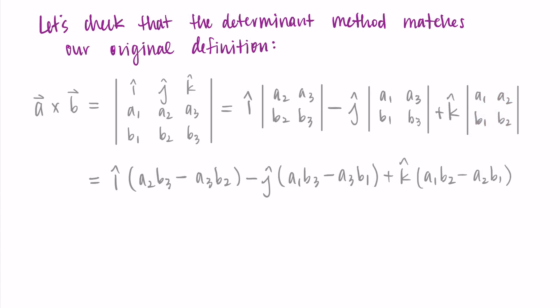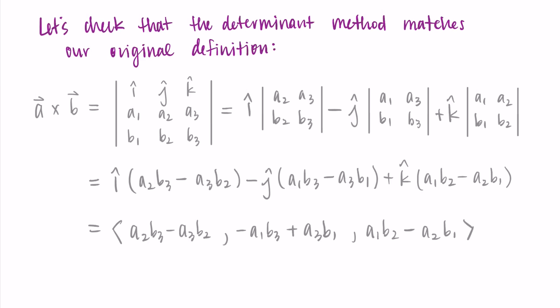Then with the way I, J, and K work, I can just put the I parts in for the X, the J parts in for the Y, and the K parts in for the Z. So I can write this as a vector: A₂B₃ minus A₃B₂. Then I have this negative here, so I have negative A₁B₃ plus A₃B₁. And finally, I have A₁B₂ minus A₂B₁.